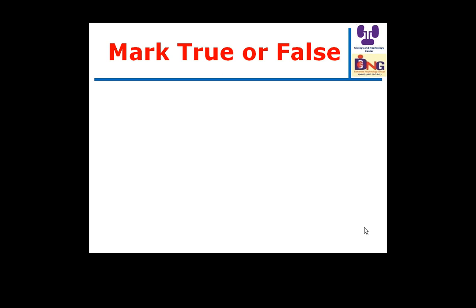As I did in the first two parts, I'll start with some statements. Dr. Kareem and Dr. Samar, for each statement, I just want to hear from you if the statement is true or false. The first statement: both metabolic acidosis and subclinical metabolic acidosis are real risk factors for chronic kidney disease. The answer is true.